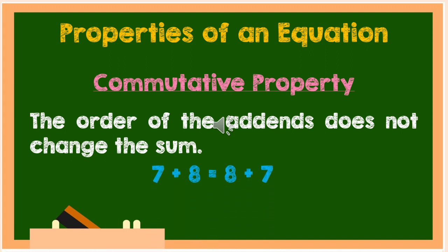The order of the addends does not change the sum. For example, 7 plus 8 is equal to 8 plus 7. 7 plus 8 is equal to 15. 8 plus 7 is also equal to 15.